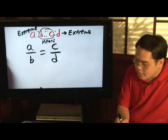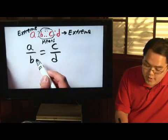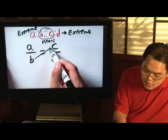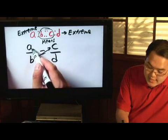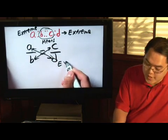So, in fraction form, the B and C are your means, and your A's and D's are your extremes here.